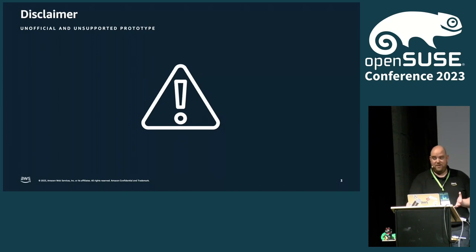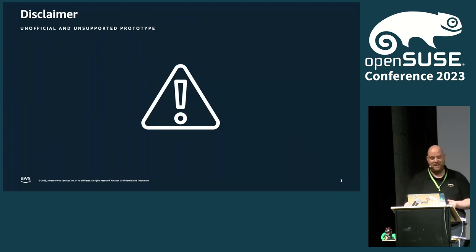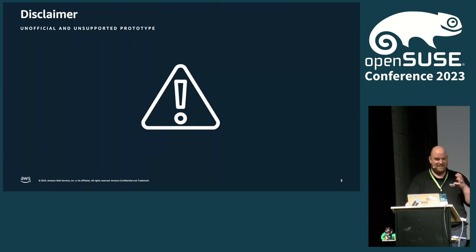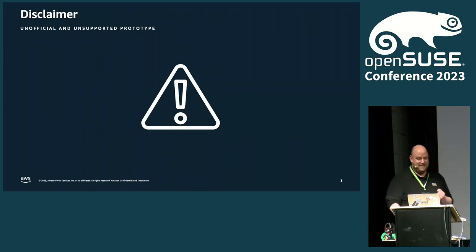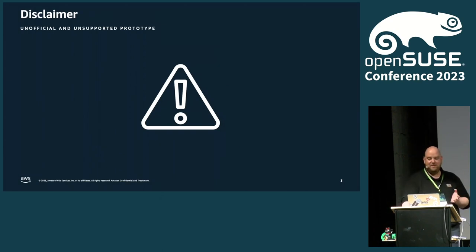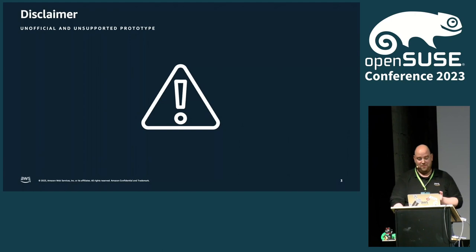Before we start, a little disclaimer. ALP is in an early development state — it's kind of a prototype, and things will change. That means the AMI build and the image that I show here and talk about today is unofficial and unsupported. It's for testing purposes only.